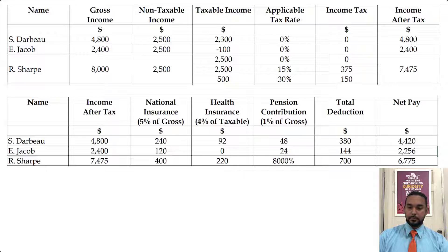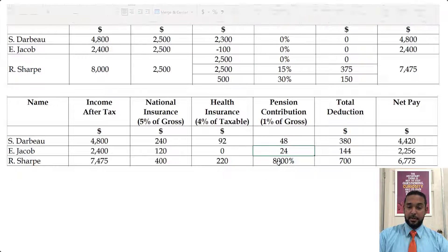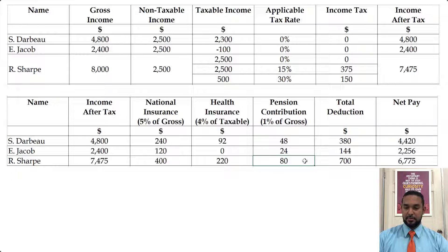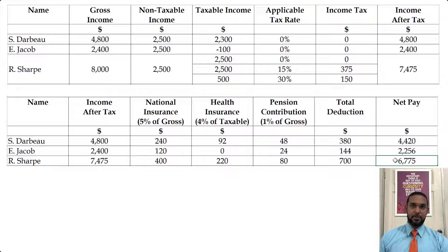For R. Sharpe under the initial interpretation, income after tax is brought down. National insurance is 5% of gross — 5% of $8,000 = $400. Health insurance is 4% of taxable income — 4% of $5,500 = $220. Pension contribution is 1% of gross = $80. Total deduction is the sum of these three, subtracted from income after tax to give net pay. This was done using the initial interpretation, which I believe was not the correct one.